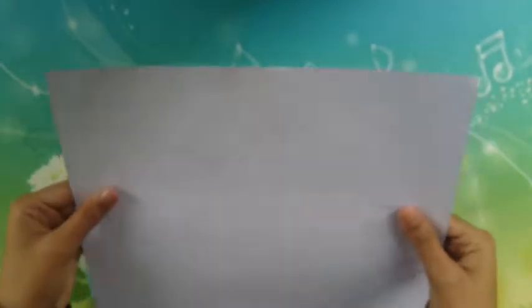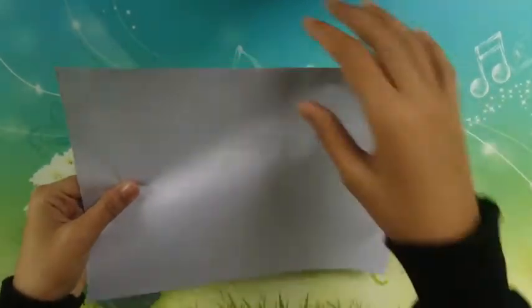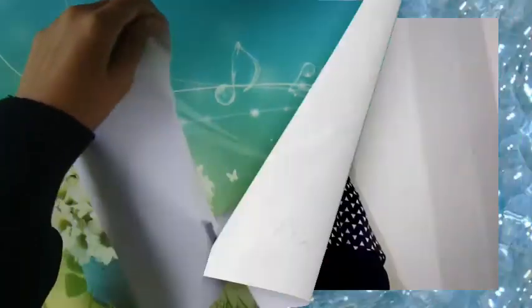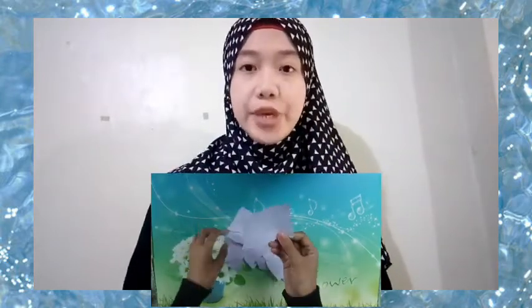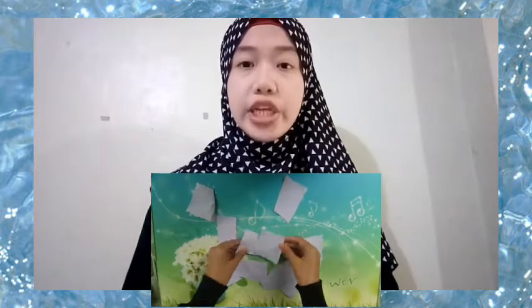Number one example of physical change is tearing a paper. Cutting paper is a physical change since only the physical properties such as appearance, the size, and shape are changed, but the chemical composition remains the same. Cutting paper is a physical change because it involves changing something without changing its chemical structure.